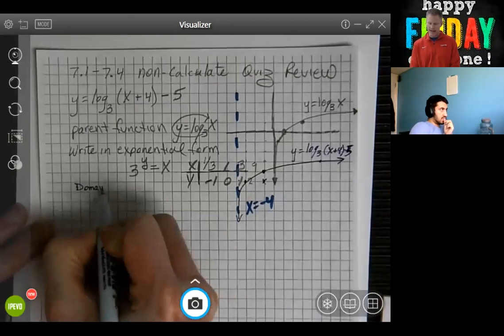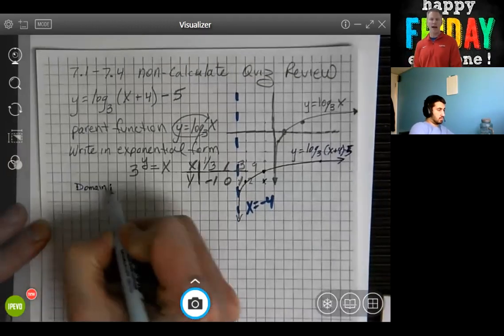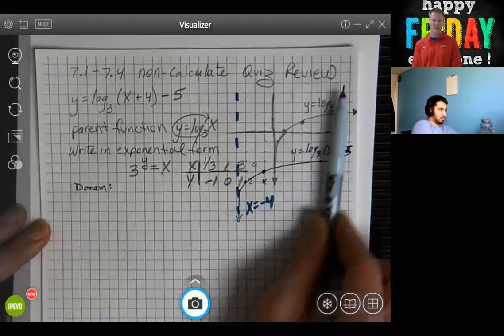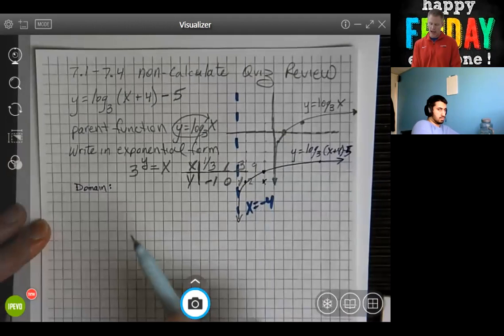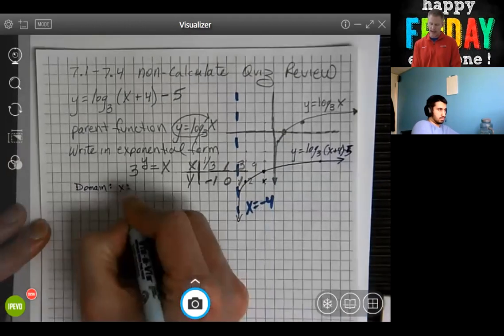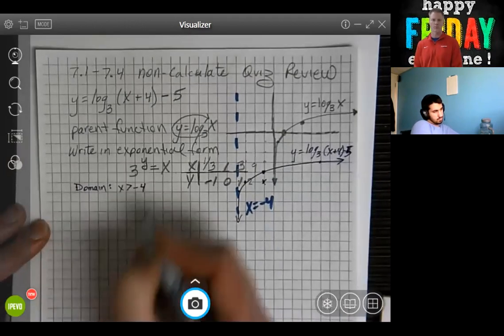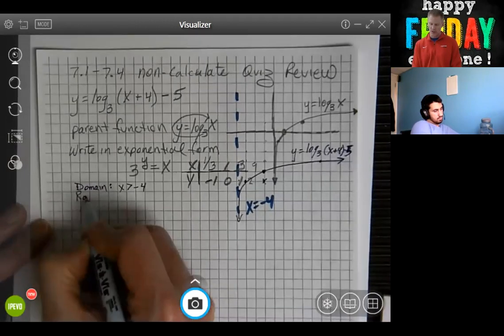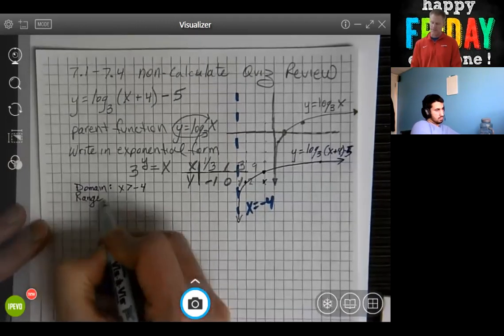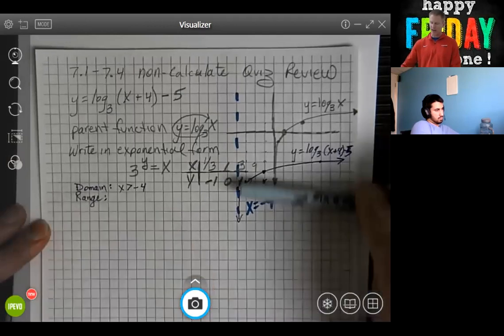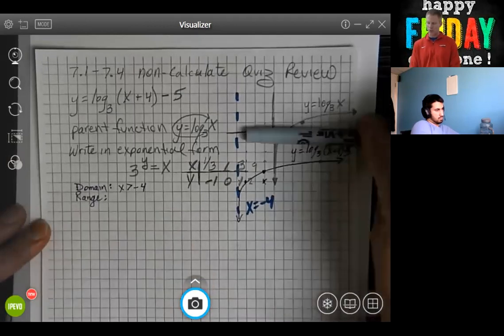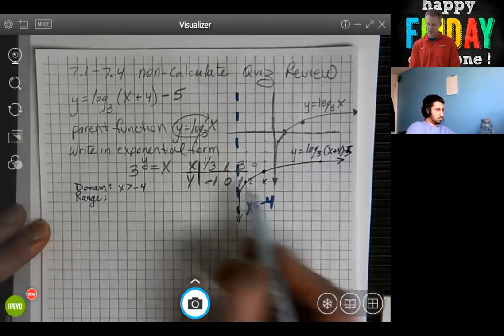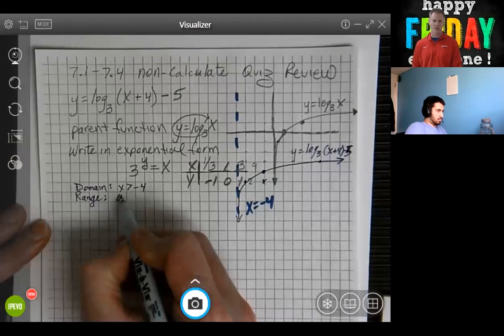So the domain, you can look at your graph, and you can see the domain is everything greater than negative 4. So x is greater than negative 4. And your range, it goes down forever and it goes up forever. Your y values have negatives, your y values have positives. So it's all real numbers.